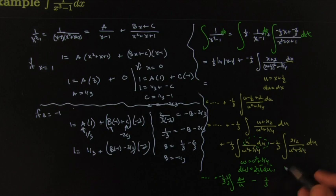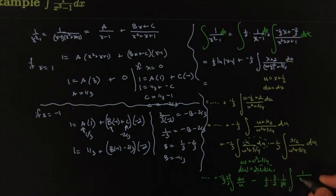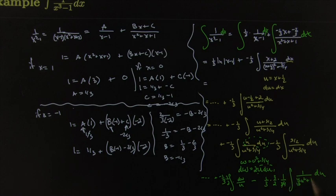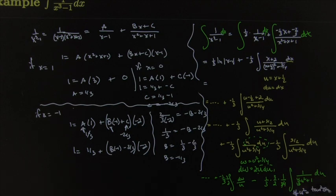The second integral is a standard trig substitution. Pull out the 3/2, and factor out 4/3 from the denominator to get (4/3)u² + 1, making the trig substitution cleaner. You want (4/3)u² = tan²θ, so the right substitution should be tan θ = (2/√3)u.